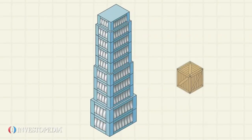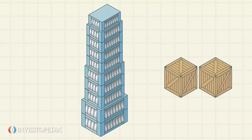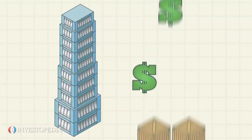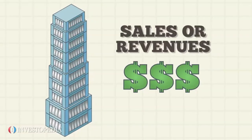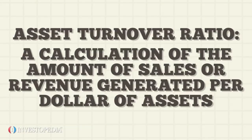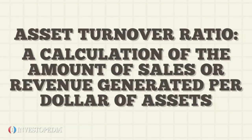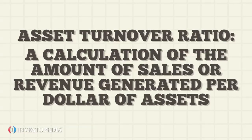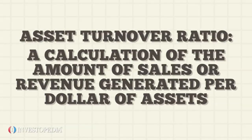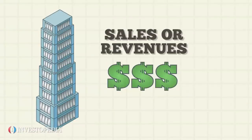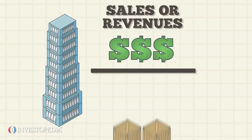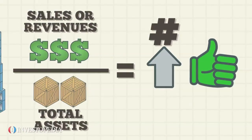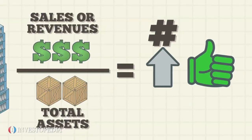The asset turnover ratio is a measure of a company's ability to use its assets to generate sales or revenue, and is a calculation of the amount of sales or revenue generated per dollar of assets. The formula for the ratio is as follows: sales or revenues divided by total assets. A higher number is preferable since it suggests that the company is using its assets efficiently to make money.